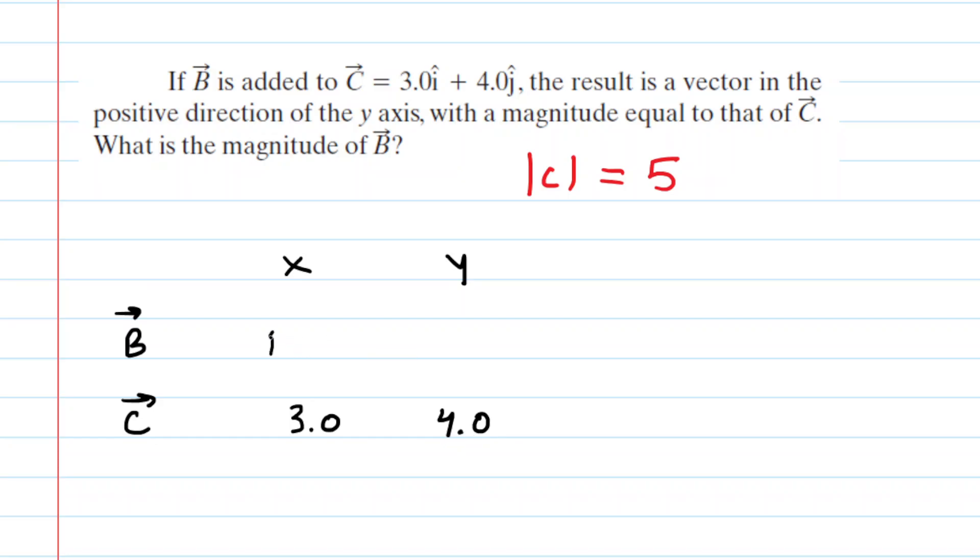Now presently we do not know the x component of vector B nor do we know the y component, but we have some clues here because it says that the result when we add the two vectors together is a vector in the positive direction of the y-axis.